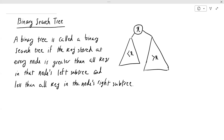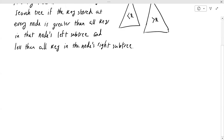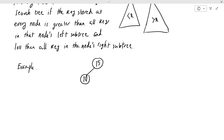That's the definition. Let me emphasize that this property must hold for every node in the tree, not just the root node. For example, if you have a binary tree where at the root you have the value 15, the left child is 10, and the right child is 21 — so far everything is good: 10 is less than 15, and 21 is greater than 15.